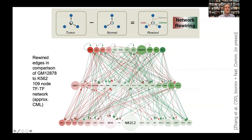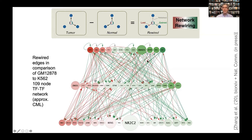If we look at the tumor, we have some connections there; the normal has different connections. Comparing them, we see some connections are lost, some are gained, and some are retained. Here's a global picture — it's very complicated — showing the 109 regulators (not all their targets). Even here you can see things that rewire a lot and all the changed connections. It's a useful picture to look at.